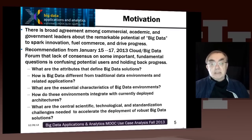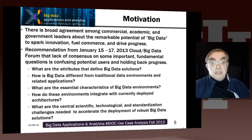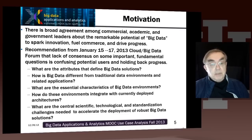We wanted to know: what makes data big? What are the attributes? We have the Vs — velocity, variety, volume, veracity, visualization — but it's not clear that everybody agrees on those Vs, and what the size of a particular V has to be to make the data big. I actually don't think the bigness of data is the critical issue; what's probably more critical is that data is important. Given we're going to call this whole process Big Data, we want to know how this process is different from traditional data environments and related applications.